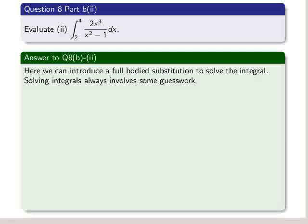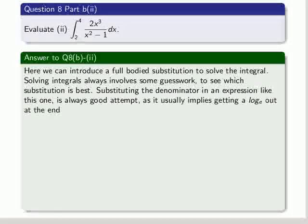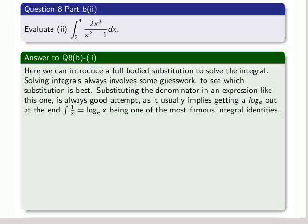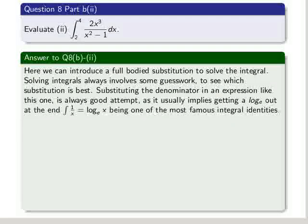We can introduce a full-bodied substitution to solve the integral. Solving integrals always involves some guesswork to see which substitution is best. Substituting the denominator in an expression like this one is always a good attempt, as it usually implies getting a log, a natural log, out at the end. Because the integral of 1 over x is equal to log e of x. This is one of the most famous integral identities.